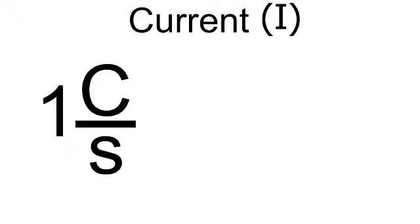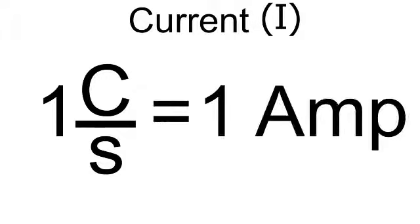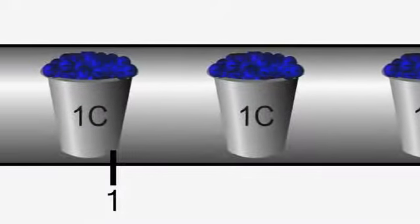A coulomb per second is given a special name. That name is an amp. But you must never forget that what an amp means is a coulomb passing a point in a second. So if there's a current of 5 amps flowing, that means 5 coulombs are passing a point in one second.